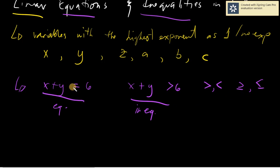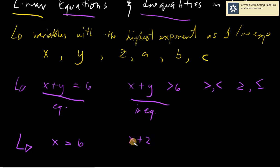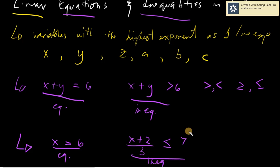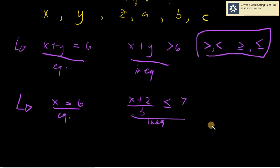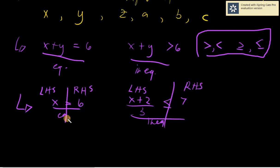For equality we just simply have the equal sign. So if you see something like x equals 6, that is an equation. And something like (x plus 2) over 3 is less than or equal to 7, that is an inequality because it has an inequality symbol. We are comparing the left-hand side and the right-hand side, and the partition between them is the comparison symbol.